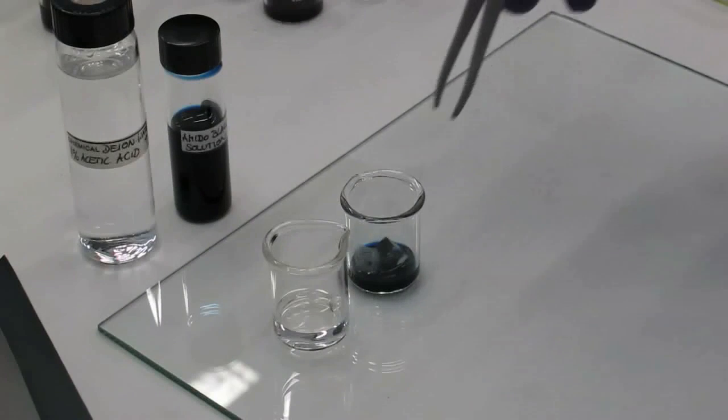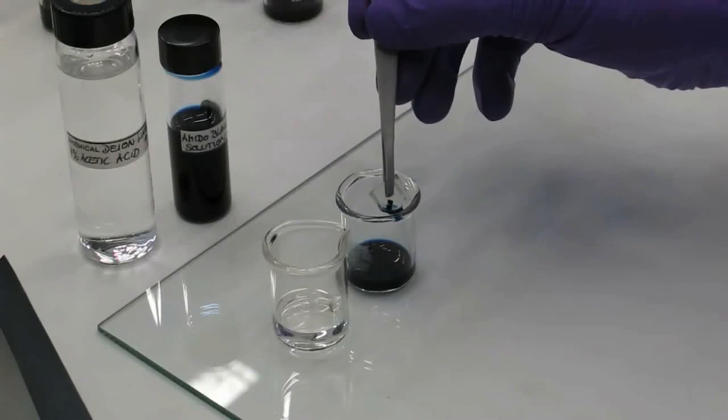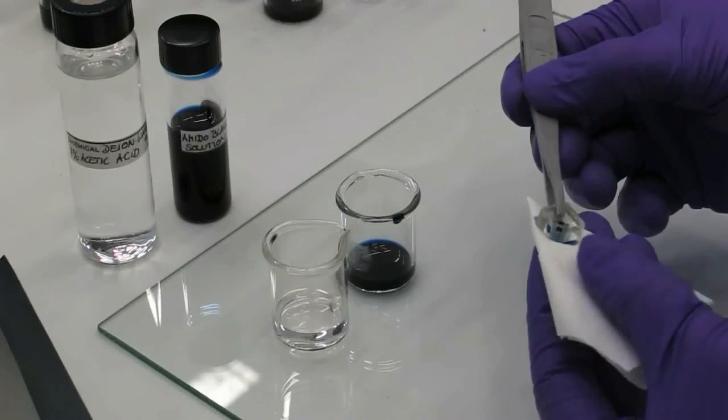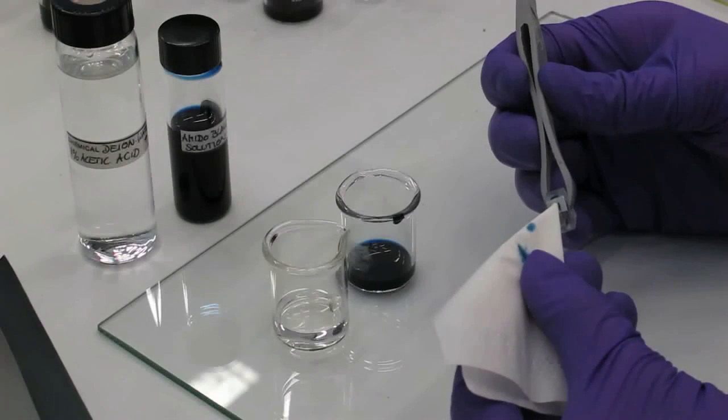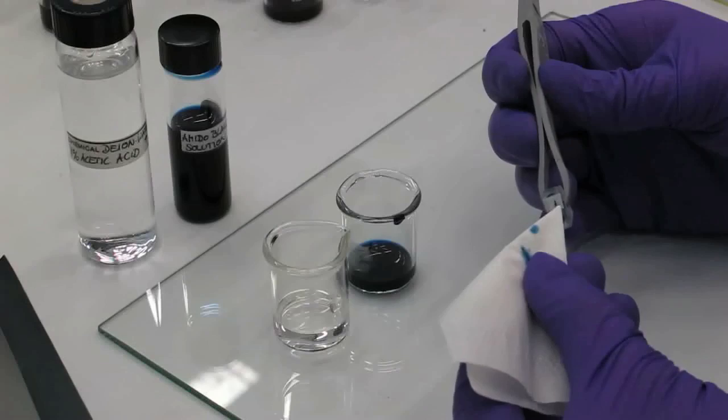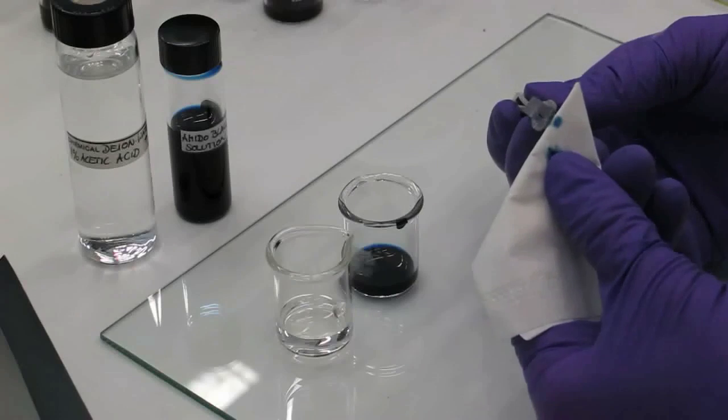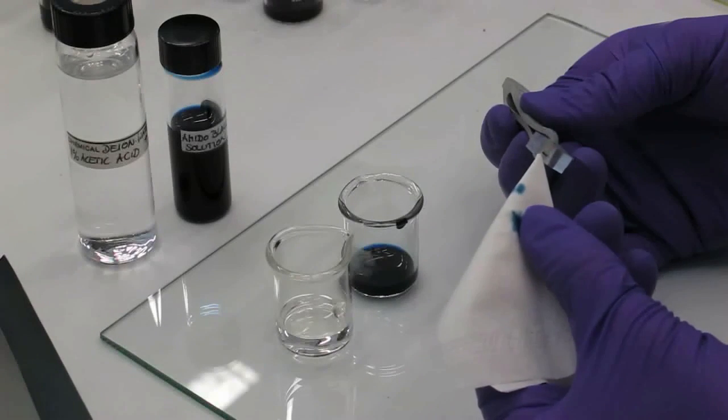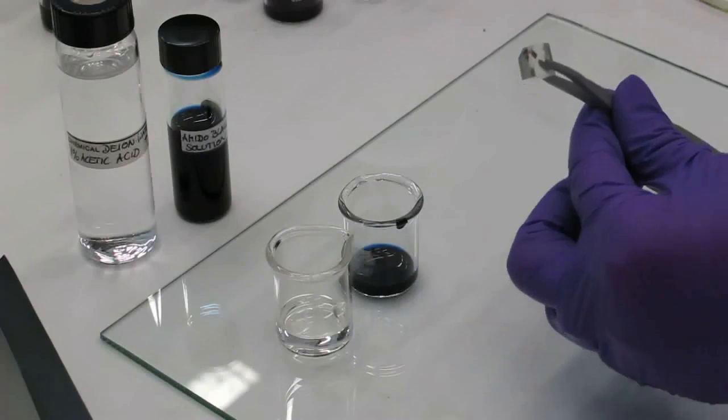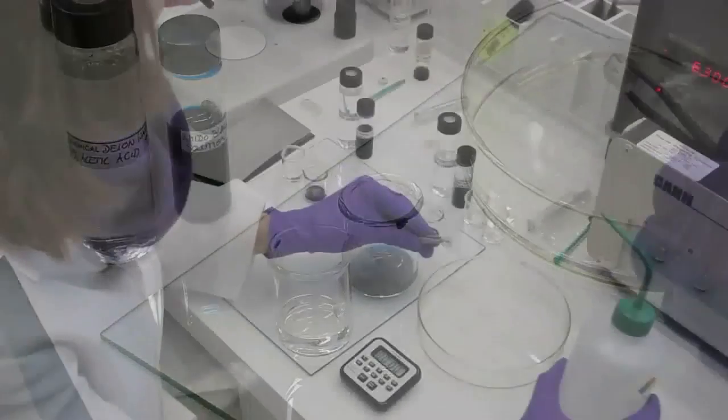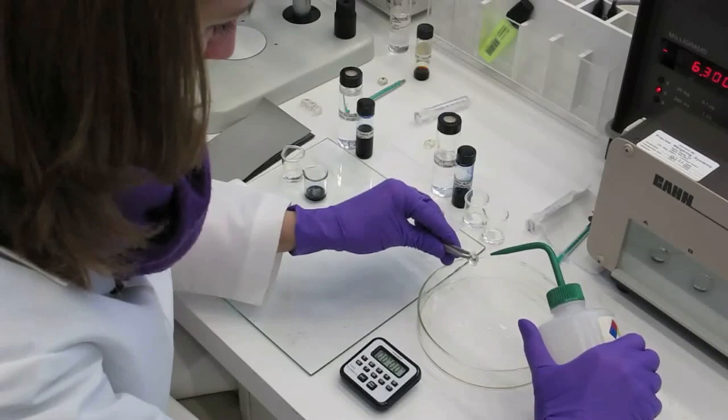Staining with Amido Black requires leaving the cross-section sample in the staining bath for approximately 15 minutes. The sample surface is then rinsed with a 1% acetic acid solution until no further stain can be removed from the sample.